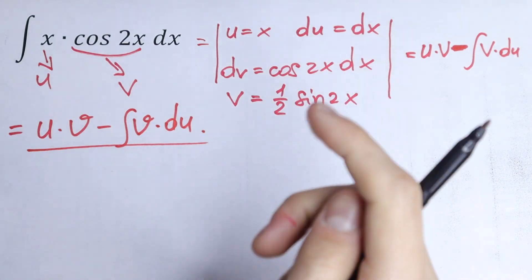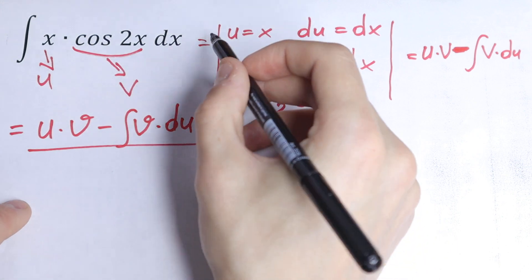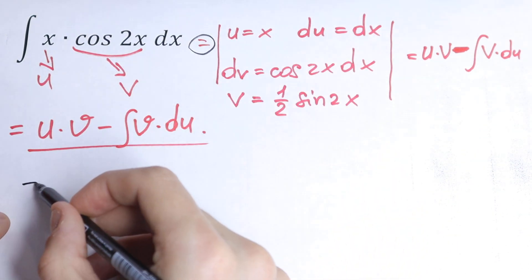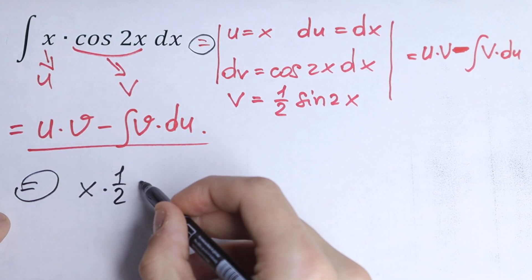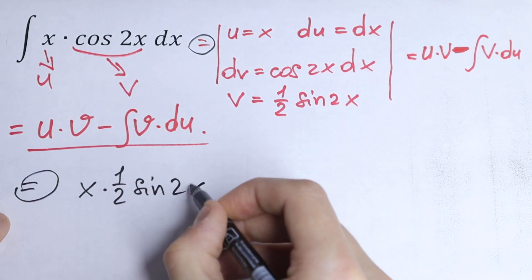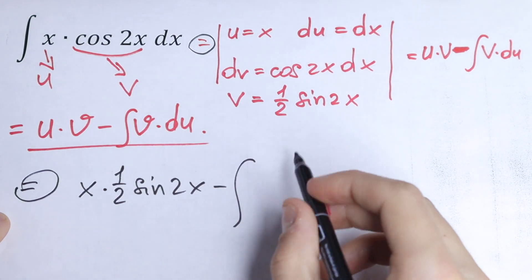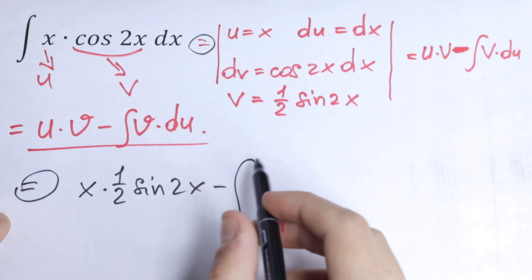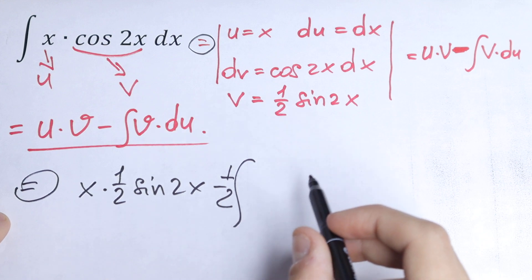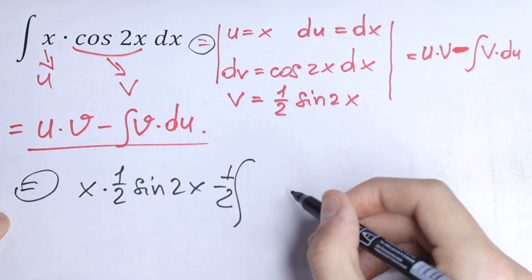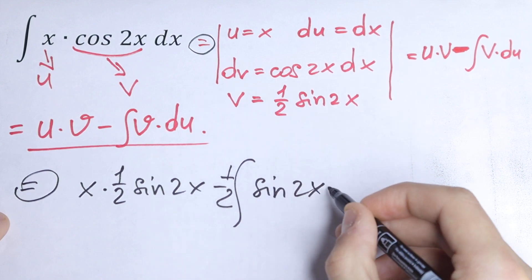So let's put this into our formula. We will have x times one-half sine 2x minus one-half integral of sine 2x dx. I put the one-half right here because we can write our constant before our integral.